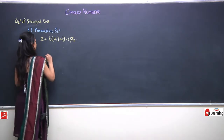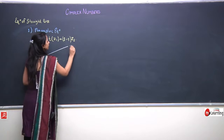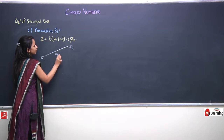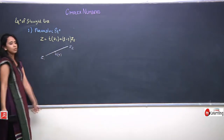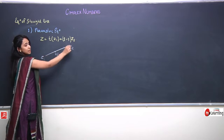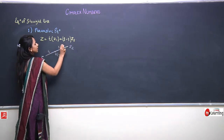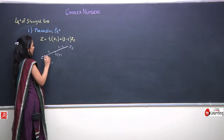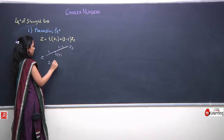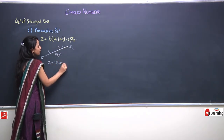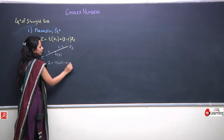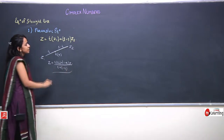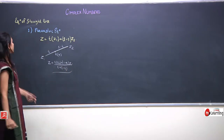Consider a line joining two points z1 and z2. Let any point z lie on this line and divide it in the ratio t : (1 - t). By the section formula, the coordinates of z are: z = [t·z2 + (1-t)·z1] / [t + (1-t)]. When we solve this, we arrive at the parametric equation z = t·z1 + (1-t)·z2.